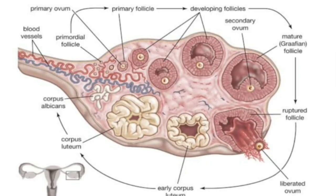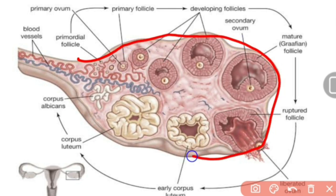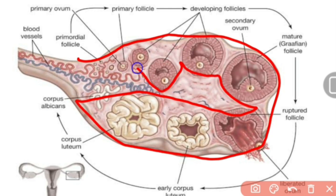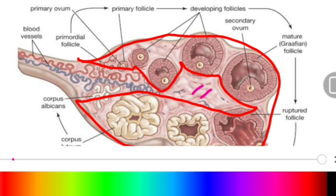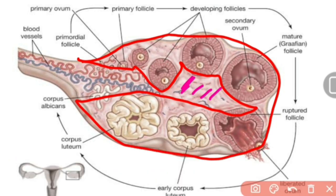The histology of the ovary from outer to inner: the outer layer is called the cortex, and deep inside is the medulla. Histologically, the ovary consists of an outer cortex and an inner medulla. The inner medulla is composed of loose connective tissue and contains blood vessels and nerves.